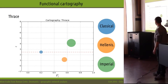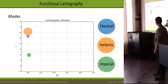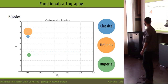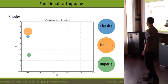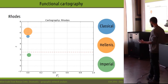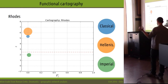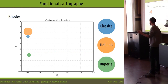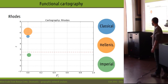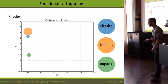Another example involves Rhodes. Rhodes is the main region in one community in the first period, but in the third period it gets absorbed into a larger community where it is no longer a hub.